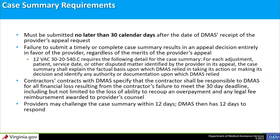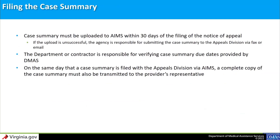The required elements of a case summary found in the Virginia Administrative Code are: for each adjustment, patient, service date, or other disputed matter identified by the provider in its appeal, the case summary must include the factual basis which DMAS relied upon in taking its action or making its decision, and any authority or documentation upon which DMAS relied. Providers may challenge the case summary within 12 days, and DMAS then has 12 days to respond to any challenge. The appeals division requires case summaries be uploaded to the AIMS portal by the deadline; if uploads are unsuccessful, the agency is responsible for submission via fax or email. On the same day the case summary is provided to the appeals division, it must also be transmitted to the provider's representative. The department or contractor is responsible for verifying the case summary deadline provided by the appeals division is correct.